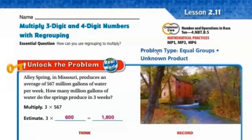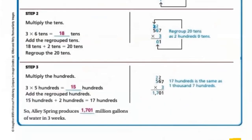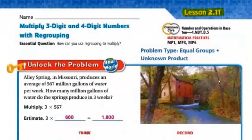Hello everyone, welcome back to grade 4. Today's lesson is lesson 2.11. Let's open your book to page 125. Today you are going to multiply 3-digit and 4-digit numbers with regrouping. Let's have the first problem.